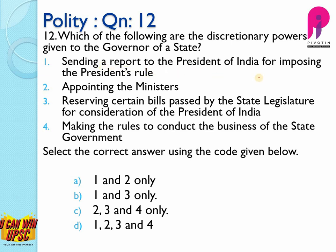Sending a report to the president of India for imposing president's rule — yes, this is correct. Appointing the ministers — the governor exhibits no discretion in the appointment of ministers; he appoints the persons whom the chief minister chooses. So this is wrong.